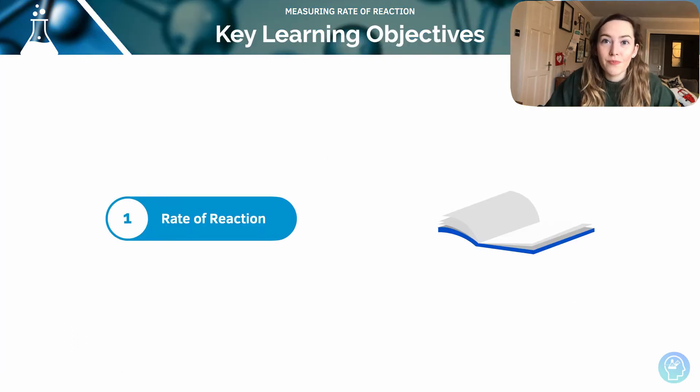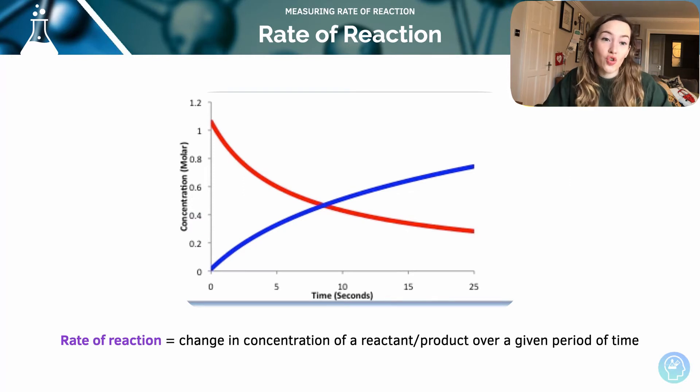The rate of reaction is equal to the change in concentration of a reactant or a product over a given period of time. They can be measured using different continuous monitoring methods.